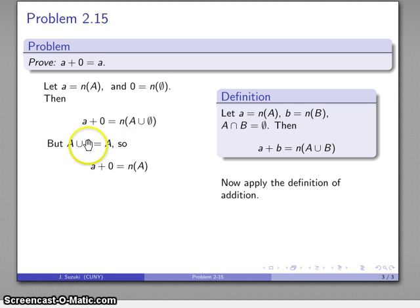A union the empty set is going to be A, because remember this is the set of everything that's in A together with anything that's in the empty set. Well, the empty set doesn't have anything in it, so when I put these two things together I just get the original set.